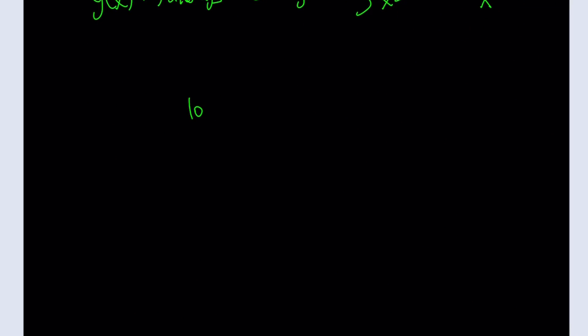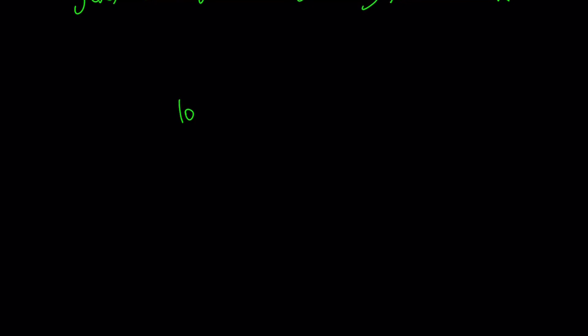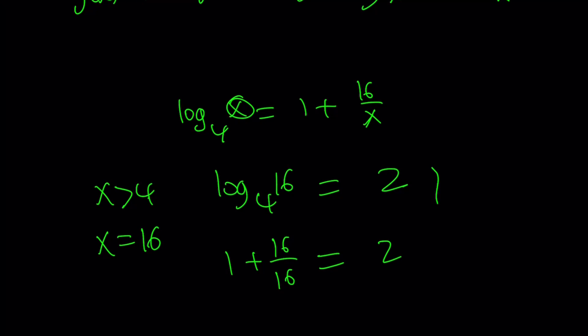So we have log x equals 1 plus 16 over x. And we noticed that x is greater than 4. So I'm just guessing that if this is an integer solution, I'm guessing that x is going to be a power of 4. But 4 is not possible. So can I try 16, 4 to the second power? If I plug in 16 on both sides, this becomes a 2. And on the right-hand side I get a 2. So that means x equals 16 is a solution. Of course it's guess and check, I know that. But at least we have a lower bound.